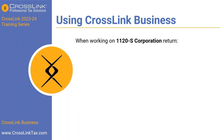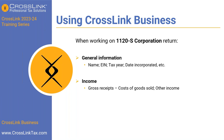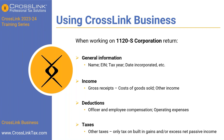Next, the 1120-S corporation return. It starts with general information — name, EIN, tax year, and so forth. Income includes gross receipts, cost of goods sold, and other income. Deductions include officer and employee compensation as well as operating expenses. Taxes include only tax on built-in gains and excess net passive income — not the full corporate income tax.